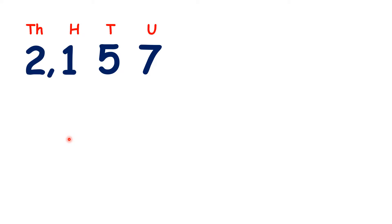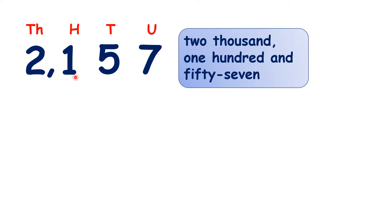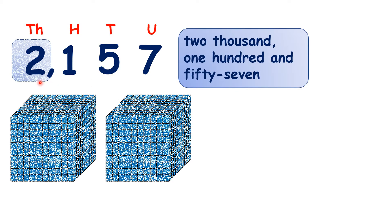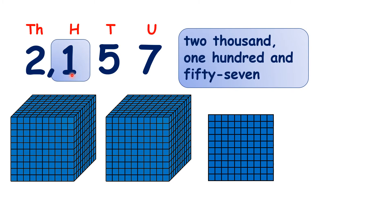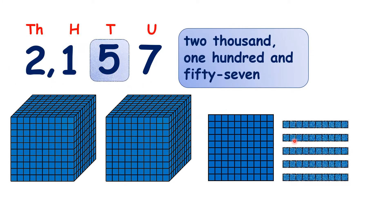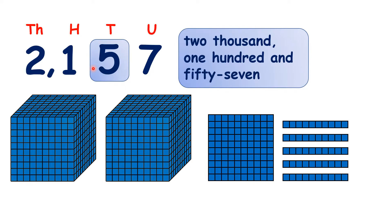Now see if you can say this number here. We say two thousand, one hundred and fifty-seven, so that's two thousands, one hundred, five tens, because fifty is five tens, and seven units.